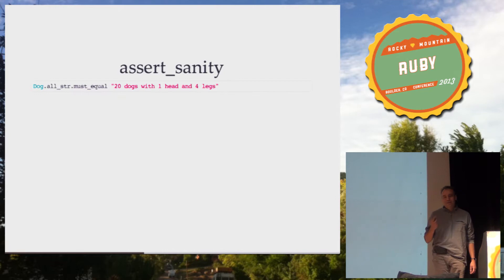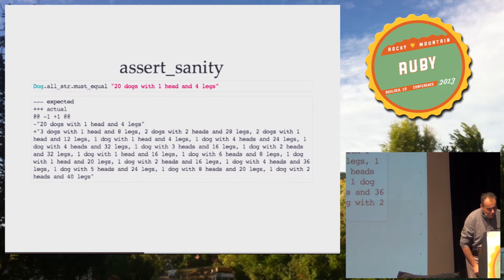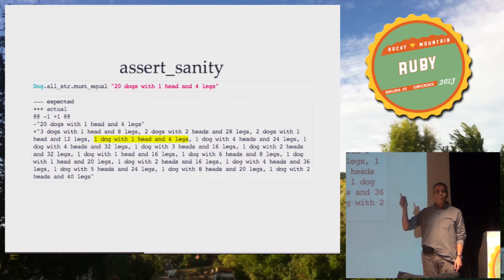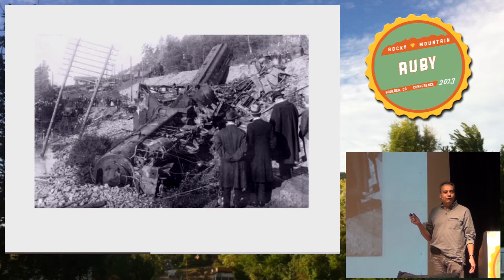We run our test and get: three dogs with one head and eight legs, two dogs with two heads and 28 legs, two dogs with one head and 12 legs. You can see we have one dog with one head and four legs — the correct result.